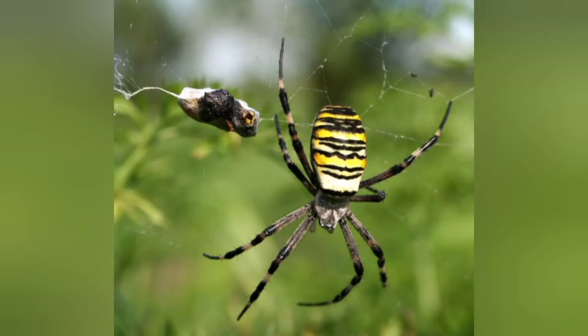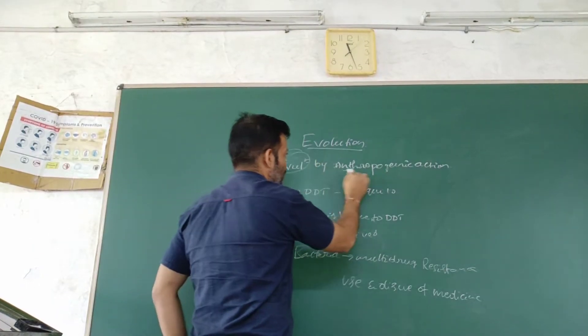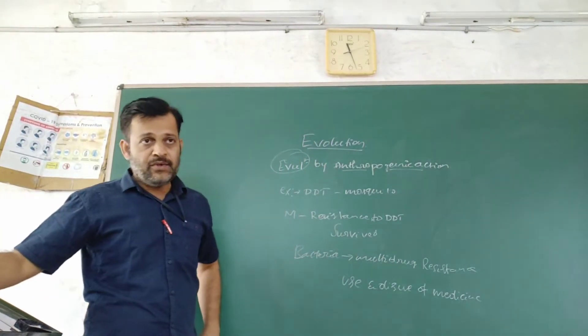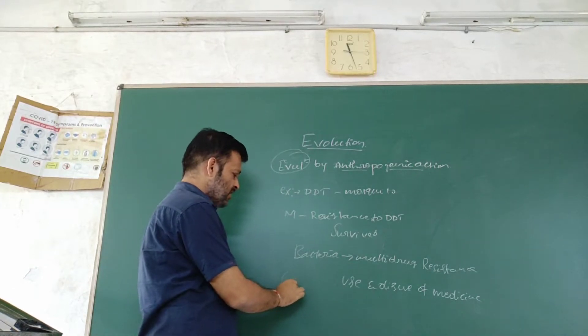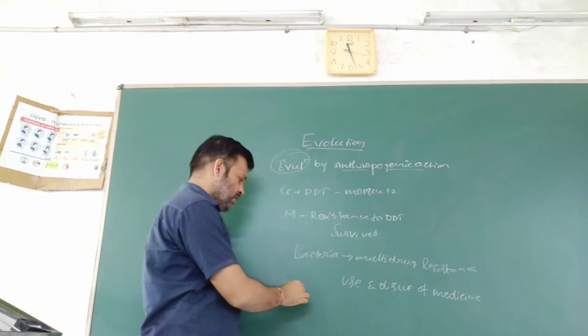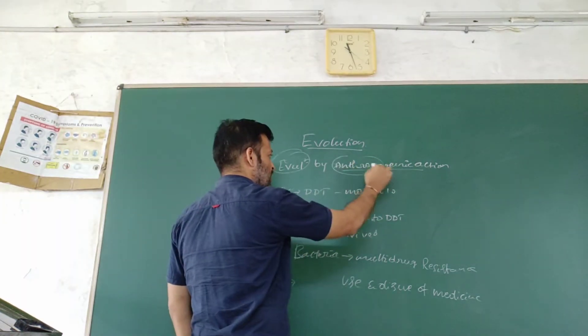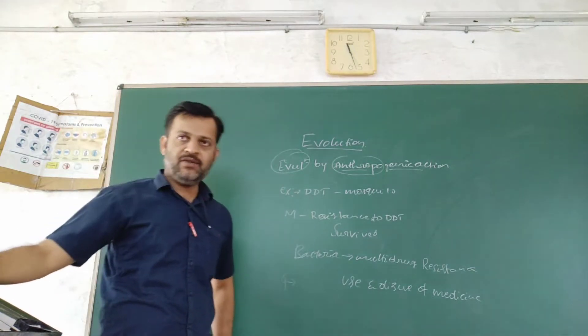Hi, namaste. Let us discuss evolution by anthropogenic action. In case of evolution, what happens is it is a gradual change over millions of years. Whereas here, anthropogenic action means the involvement of man or human beings.